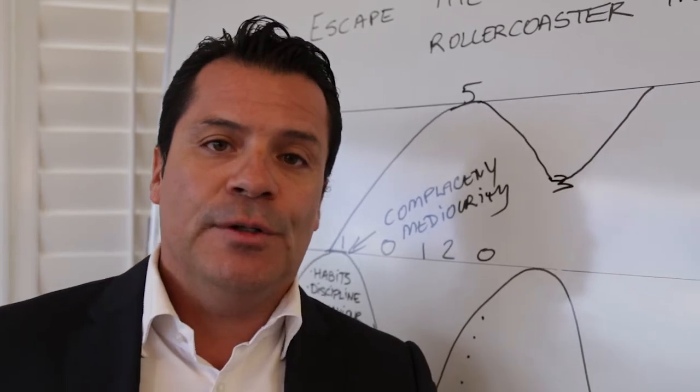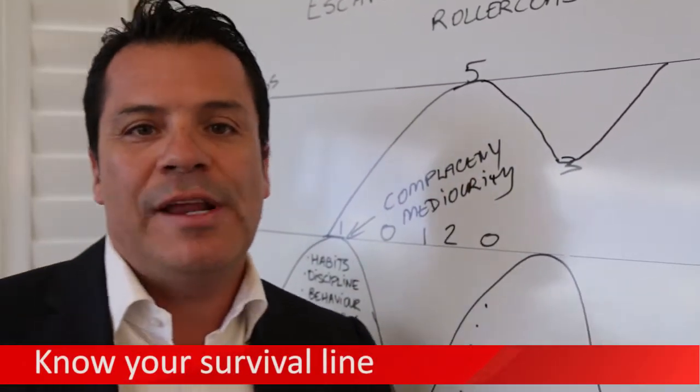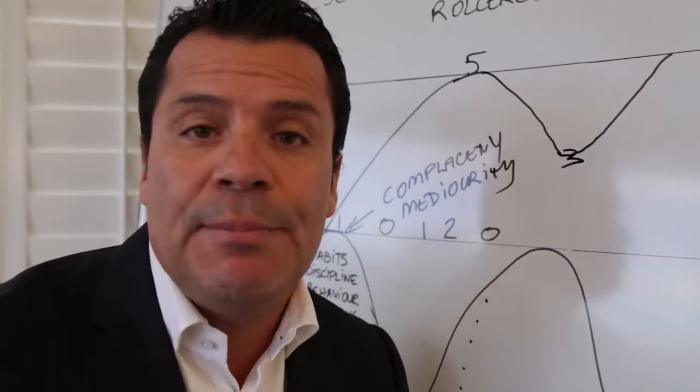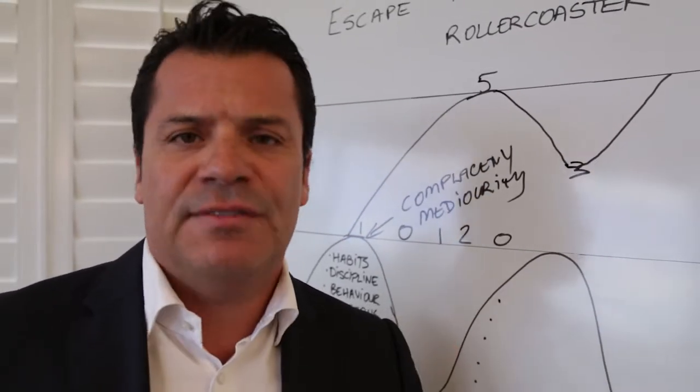So what I would like for you to do over the next 12 months is understand what is your survival line in 2014. How much do you need to be earning in terms of covering your mortgage repayments, your car repayments, your kids school fees, going on a holiday, whatever it may be, just to survive.